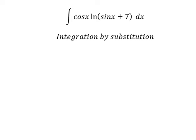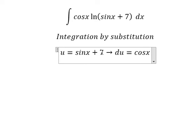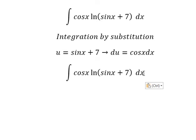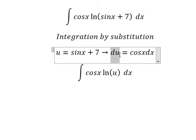I will put u equal to sinx plus 7. Later, we take the derivative of both sides. This one we have cosx, and this one, the constant, gives us zero. Now we change this to u, and cosx dx we change to du.